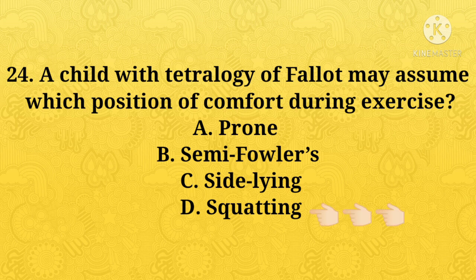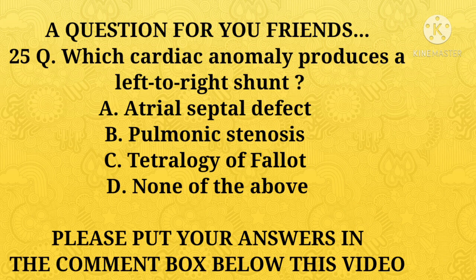A child with tetralogy of Fallot may assume which position for comfort during exercise? A: prone, B: semi-Fowler's, C: side-lying, D: squatting. Option D, squatting, is the right answer. Question for you friends: which cardiac anomaly produces a left to right shunt? A: atrial septal defect, B: pulmonic stenosis, C: tetralogy of Fallot, D: none of the above. Please put your answers in the comment box below. Thanks for watching — please like, share, and subscribe.